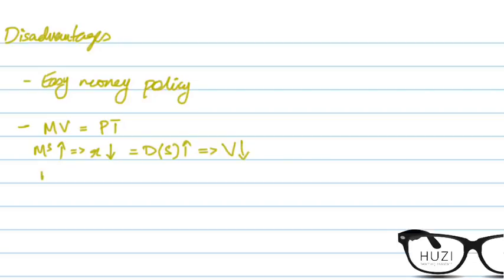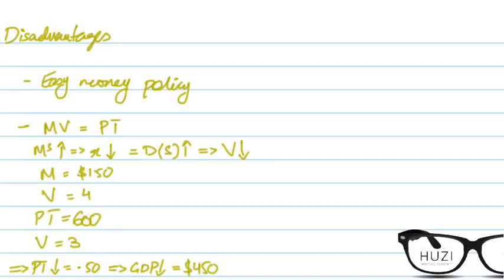And if we do a short example, let's say the money supply is 150 and let's say the velocity was 4. So this means that PT is MV and 150 times 4, 600. This is the nominal GDP. But because velocity is 3, this has led to PT to fall by minus 50, resulting in the nominal GDP to fall to 450. This means that the policy, easy money policy has been limited by the reduction in the money velocity. So this is another form of crowding out.